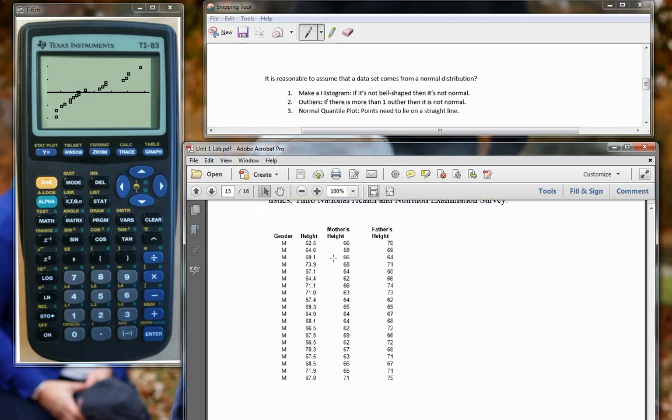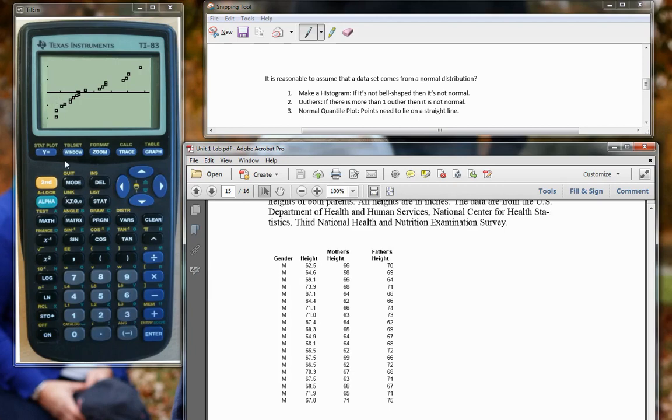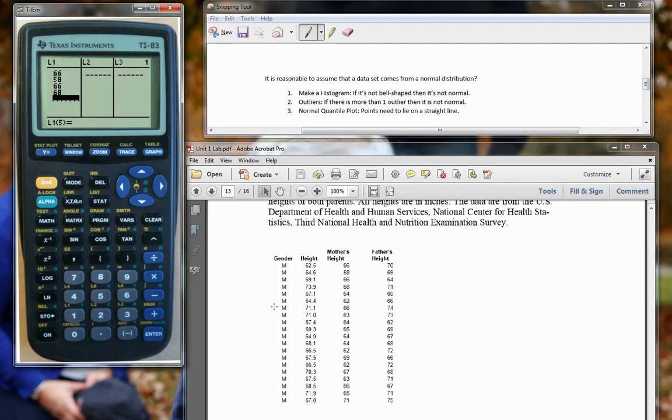We're gonna look at the heights and we're gonna put in these boys heights that we saw. You know what, let's go ahead, just because they're a little bit easier numbers, let's check out the mother's heights. Okay, so I'm gonna put these in. Heights are something that we normally consider to be normally distributed, so let's see if this data set shows that.